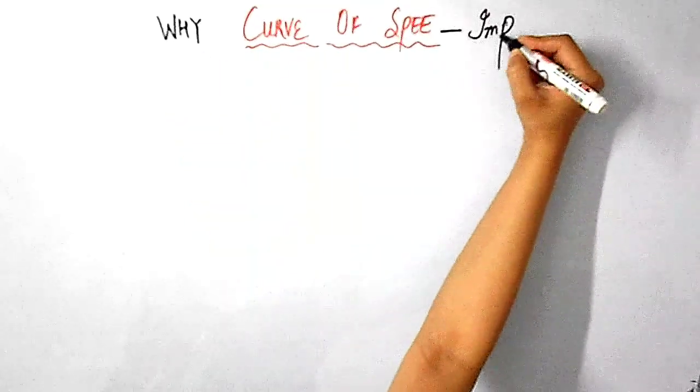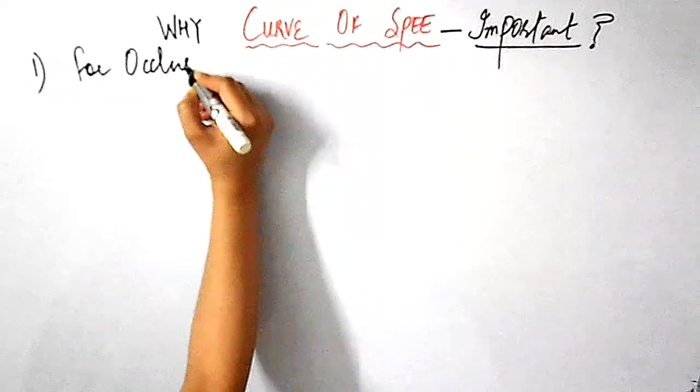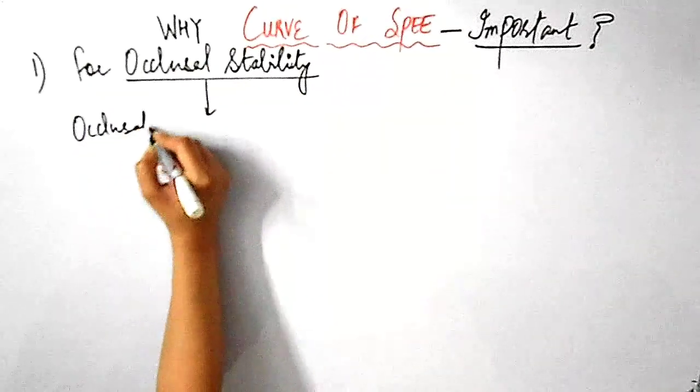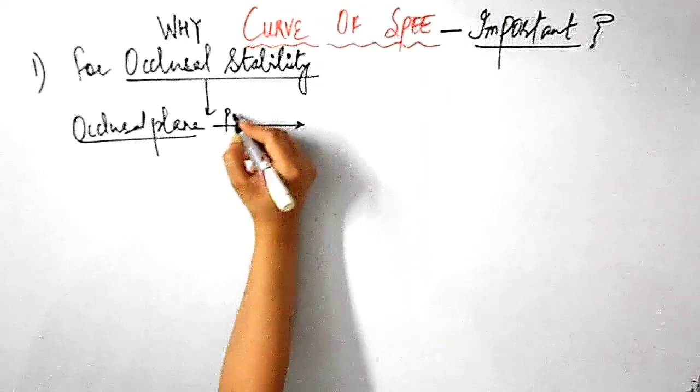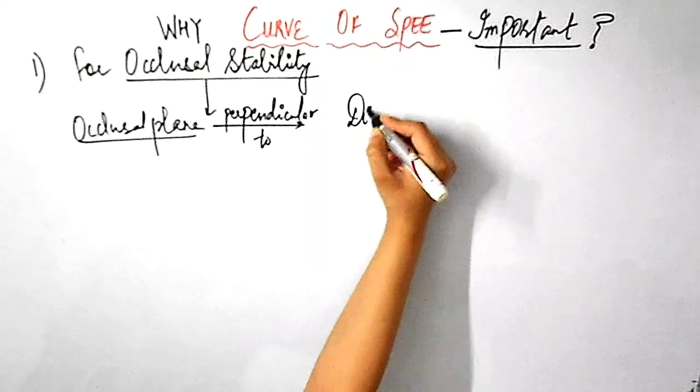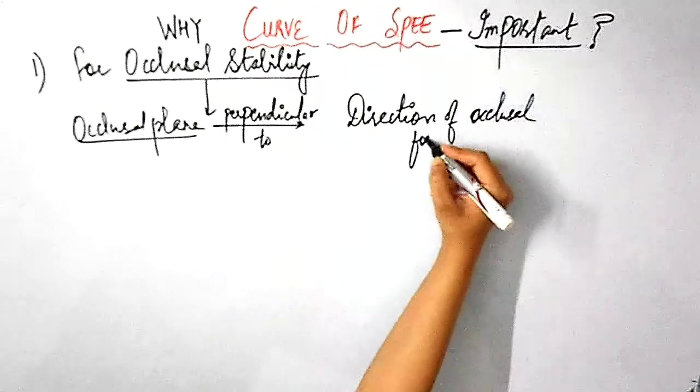Now, let me tell you what is the importance of curve of Spee. Why is the curve of Spee so important? So, first reason for the curve of Spee being so important is that for maximum occlusal stability, the occlusal plane should be oriented such that it is perpendicular to the direction of occlusal forces.